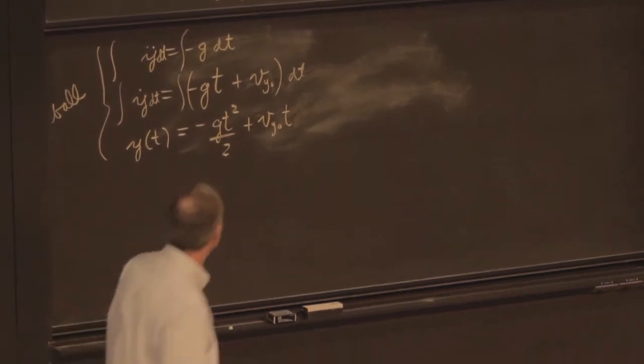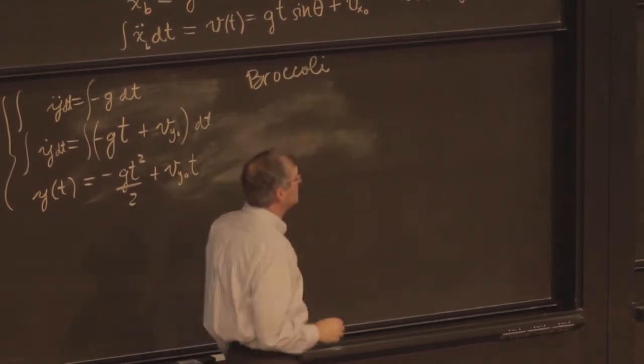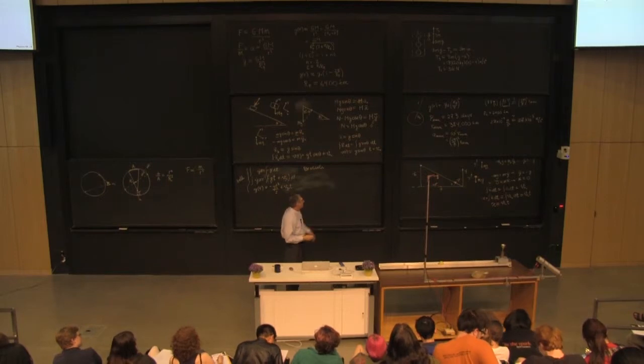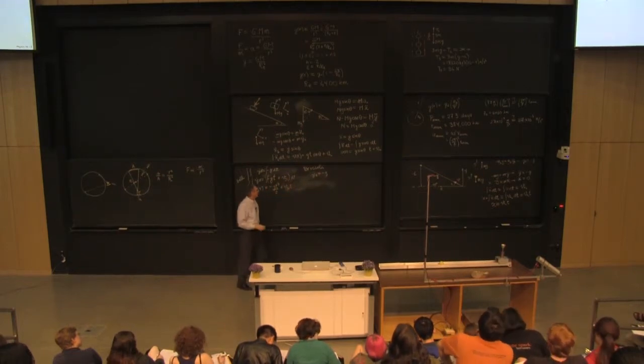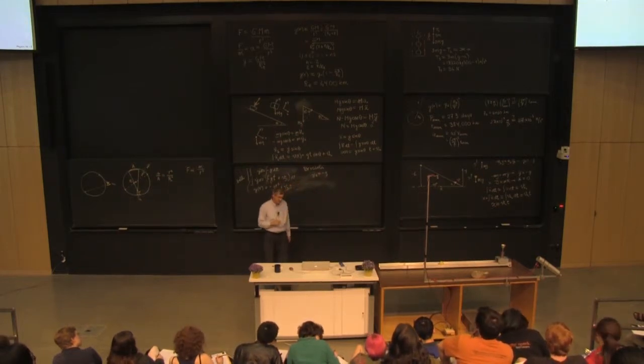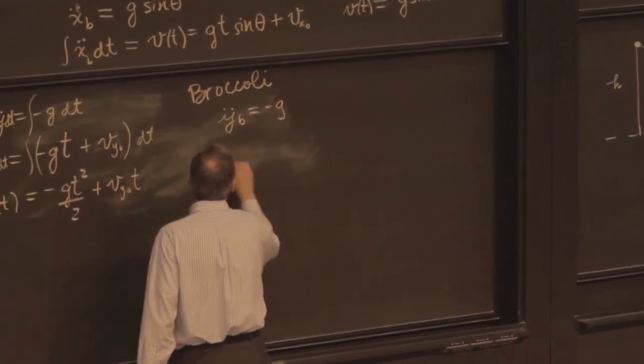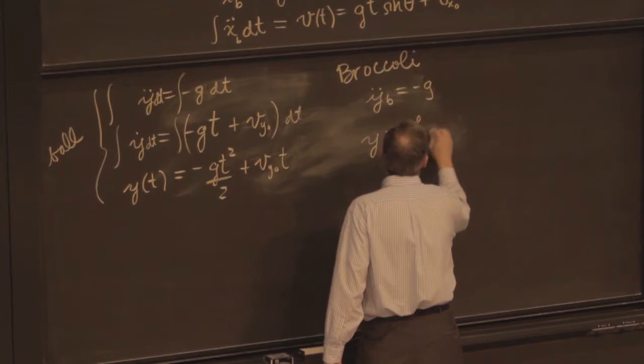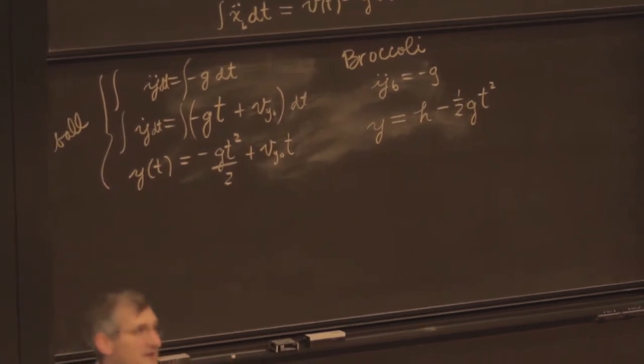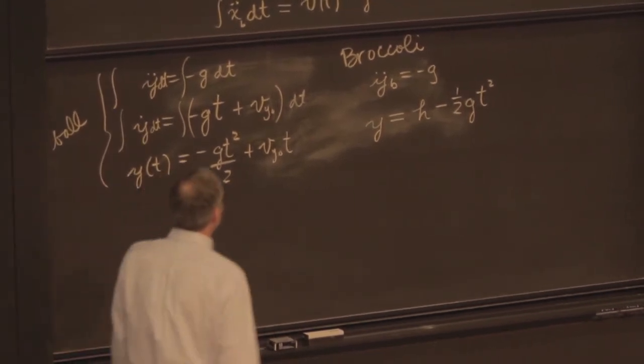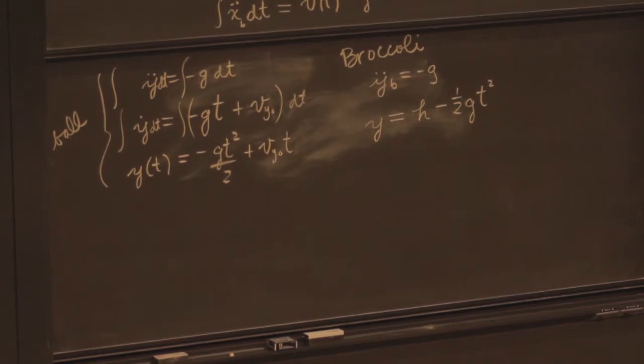What do I get for broccoli? So broccoli has acceleration y double dot b is equal to minus g. Humor me. What's the initial velocity of broccoli? Zero. So we're going to jump straight to y is equal to h minus 1 half g t squared. Uniform acceleration with g. Integrate twice. The initial position is h. There's no v y0 term.